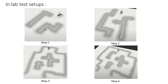We have also demonstrated the effectiveness of our method on real robots in lab settings. These experiments were conducted on various maps, each exhibiting escalating complexity from 1 to 4. The following experiment videos showcase real-time planning and are played back at 1x speed.